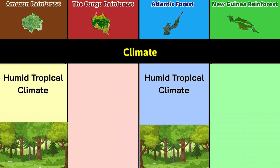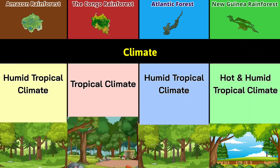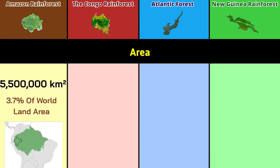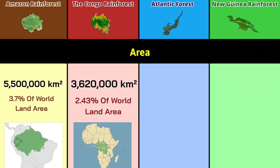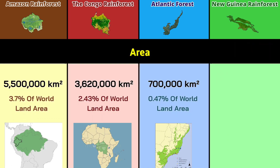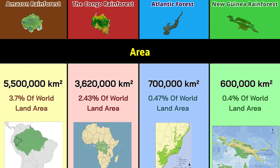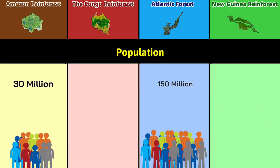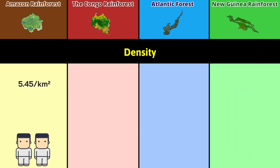Climate: humid tropical climate, humid tropical climate, hot and humid tropical climate, and tropical climate. Area: 5.5 million square kilometers, 3.62 million square kilometers, 700,000 square kilometers, and 600,000 square kilometers. Population: 30 million, 150 million, 10 million, and 75 million.